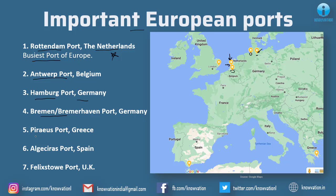Next is Piraeus port, which is in Greece — Greece is located much lower in Europe, near Bulgaria. Next is Algeciras port, which is in Spain. This is near the Strait of Gibraltar. Then Felixstowe port, which is in the UK, near to the Netherlands. So these are the important European ports — please remember their names and the corresponding countries, and try to visualize them on the map.